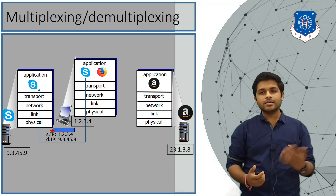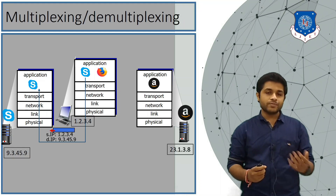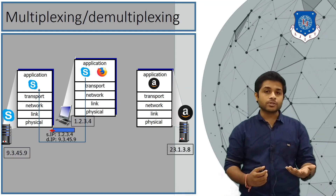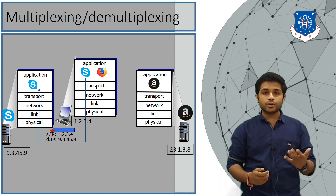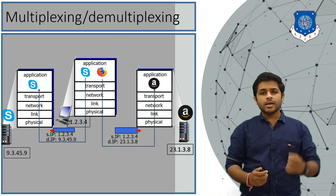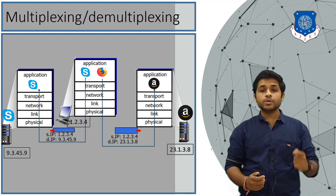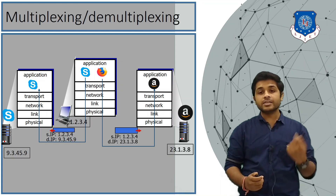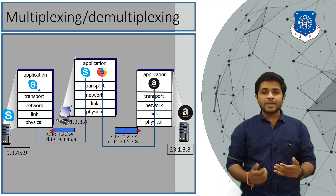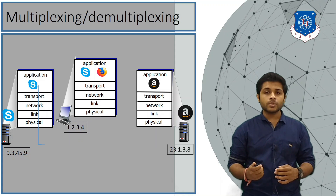Your computer knows the server's IP address using DNS, the domain name system — we will discuss DNS when we cover the application layer. Now, when you open the Amazon website in your browser by typing www.amazon.com, a request is sent from your computer to the Amazon server. That request message has source IP 1.2.3.4 and destination IP 23.1.3.8.